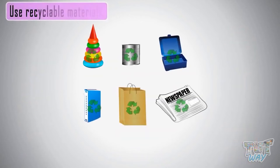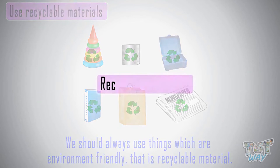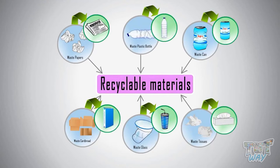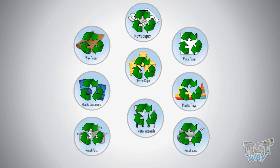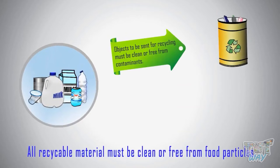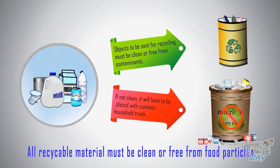These things cannot be recycled. We should always use things which are environment-friendly, that is, recyclable materials. Today we learned that materials we can process to make new things are called recyclable materials. We also learned about various types of papers, plastics, and metals that can be recycled, and we must clean them before giving them for recycling — otherwise they'll have to be placed with common household trash that can't be recycled.